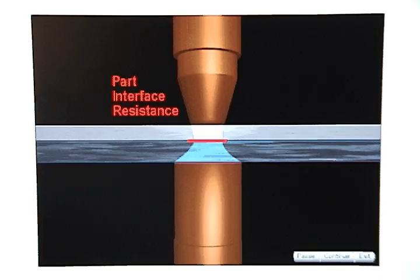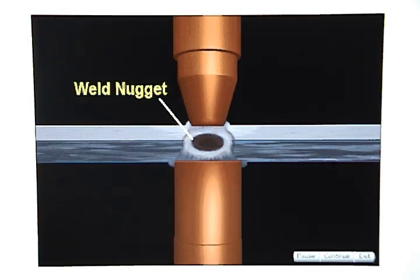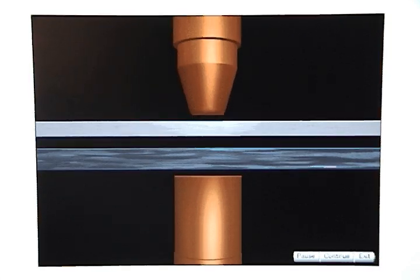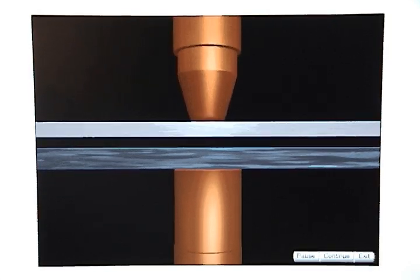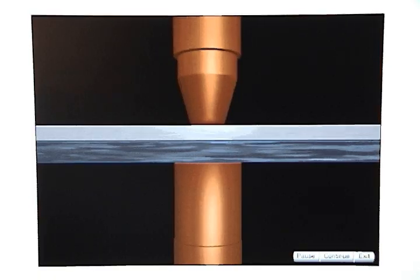Resistance to the current at the part interface creates enough heat to melt the metal and cause a weld nugget to form. When the weld gun closes, the weld tips contact the metal and squeeze them together.